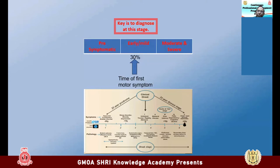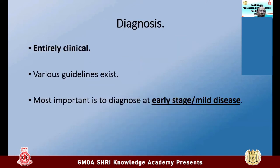One of the most important objectives of this talk is to diagnose patients with Parkinson's at a very early stage, because if you diagnose early you can manage them very well and their quality of life can be as good as a normal person's. Unfortunately, what is happening today is that we wait until patients have moderate to severe disease, which should not happen. The important message is that the diagnosis of Parkinson's is entirely clinical — you don't need any investigation.